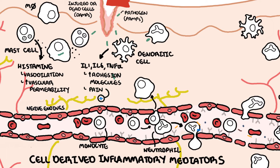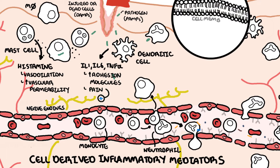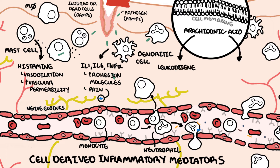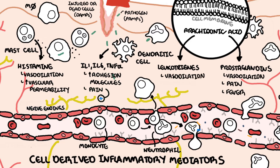Injured cells and residing immune cells also respond by synthesizing and releasing inflammatory mediators from the arachidonic acid metabolite, and these include leukotrienes and prostaglandins. Prostaglandins cause vasodilation, stimulate nerve endings causing pain sensation, and also cause fever. Leukotrienes cause vasodilation and act as a chemokine for chemotaxis, attracting macrophages and neutrophils, which phagocytize pathogens and cellular debris to remove them.